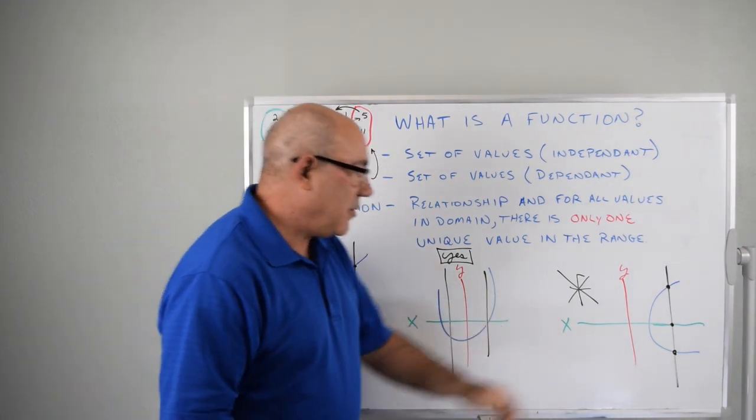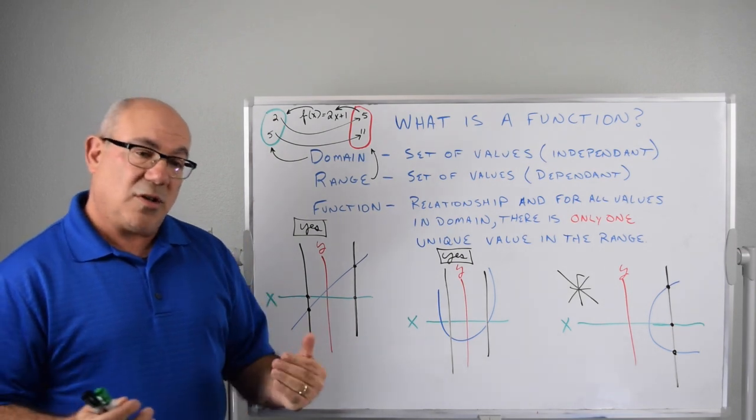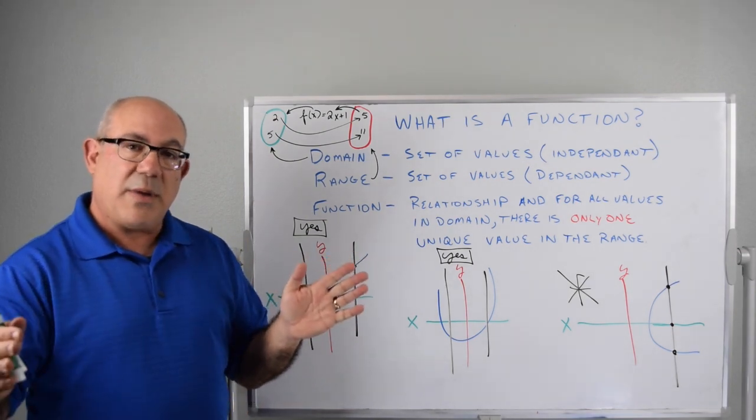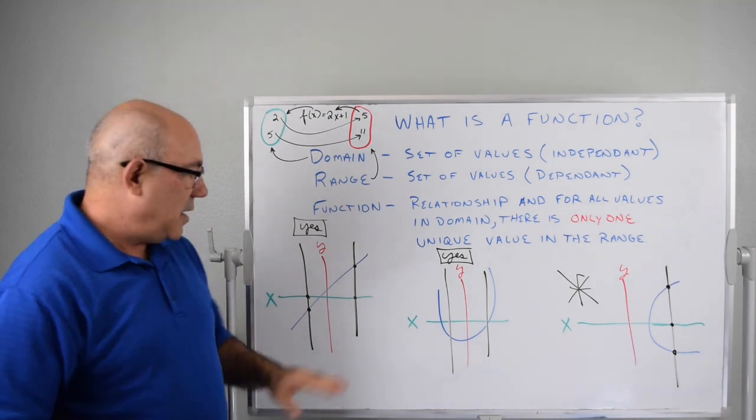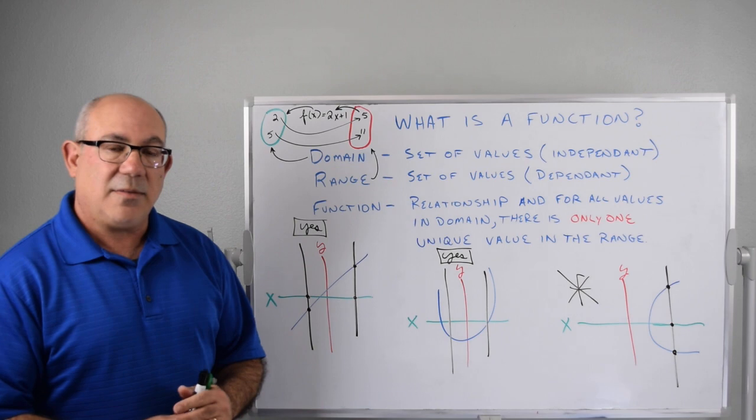So therefore, it would not be a function. So the first two do, the last one doesn't. So there's two ways you can look at things. You can look at the ordered pairs and figure it out like we did on the first part of the video. And then you can use the vertical line test like we did in the second part of the video.